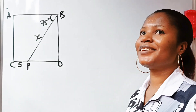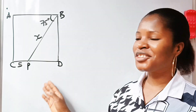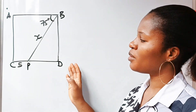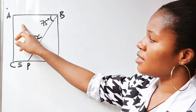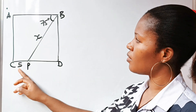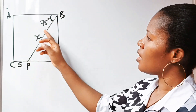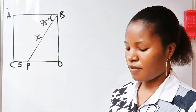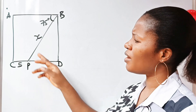Welcome back to my channel. Today we are giving this amazing, interesting geometric question to solve. Now, this is not drawn to scale. This is a square. From C to P is 5. The length X we are asked to find, and angle ABP is 75 degrees.